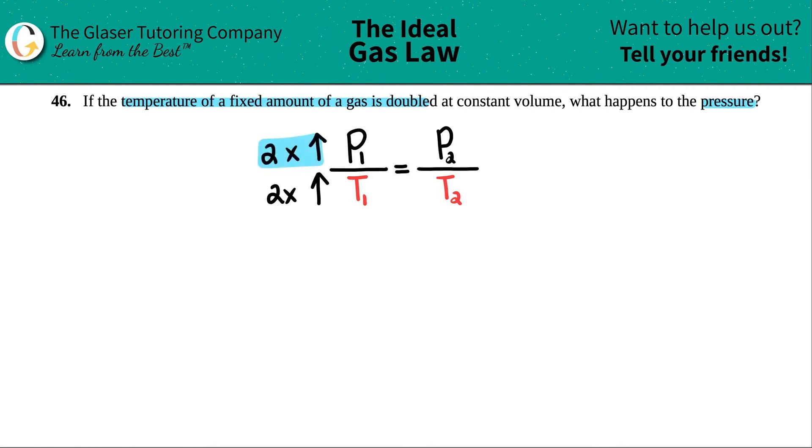Basically, it all comes down to just knowing your relationships. So I'll say P is also doubled because it's a direct relationship. And that's it.